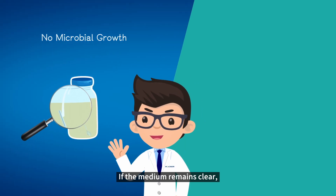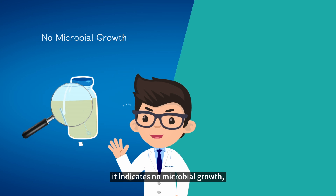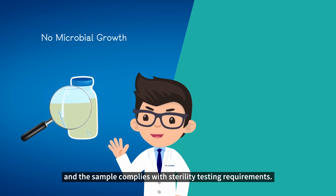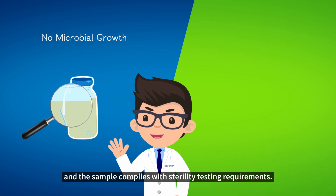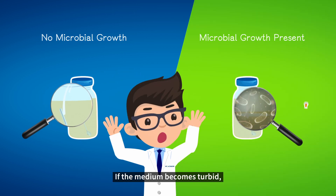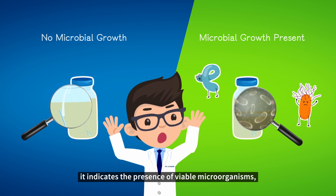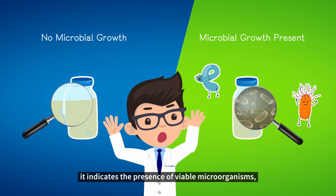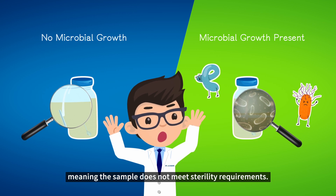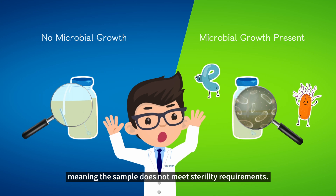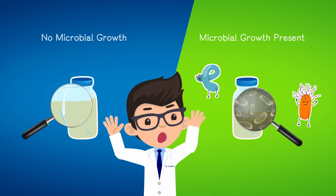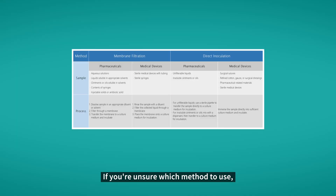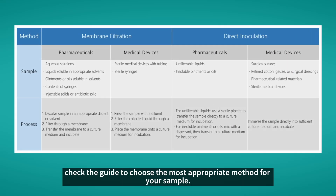If the medium remains clear, it indicates no microbial growth and the sample complies with sterility testing requirements. If the medium becomes turbid, it indicates the presence of viable microorganisms, meaning the sample does not meet sterility requirements. If you're unsure which method to use, check the guide to choose the most appropriate method for your sample.